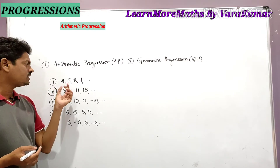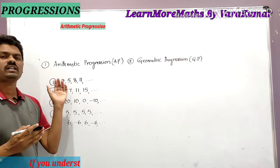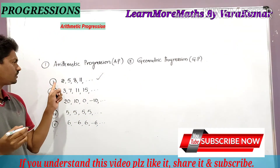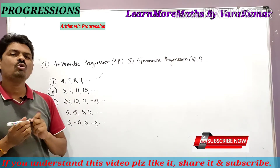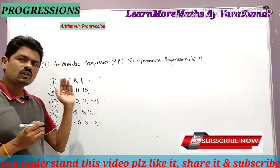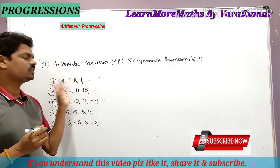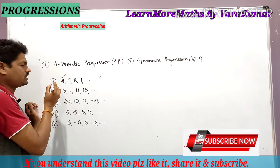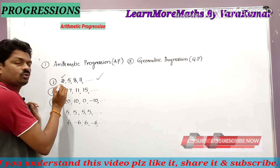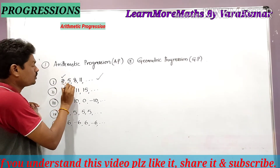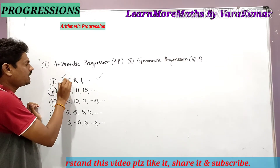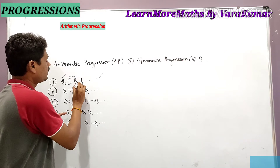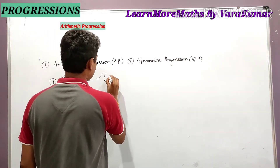You have to observe whether there is any relation between successive terms in these series. Taking the first list — 2, 5, 8, 11 — the numbers involved in a series are called terms. Observe: if you add 3 to 2 you get 5, add 3 to 5 you get 8, add 3 to 8 you get 11. So by adding 3 to the preceding term we get the next term.